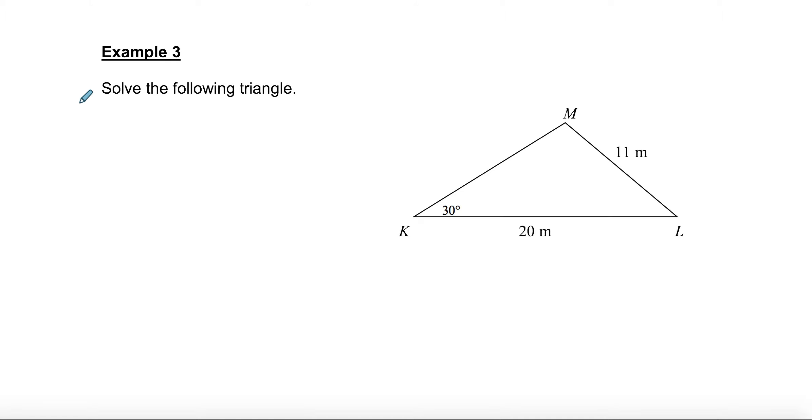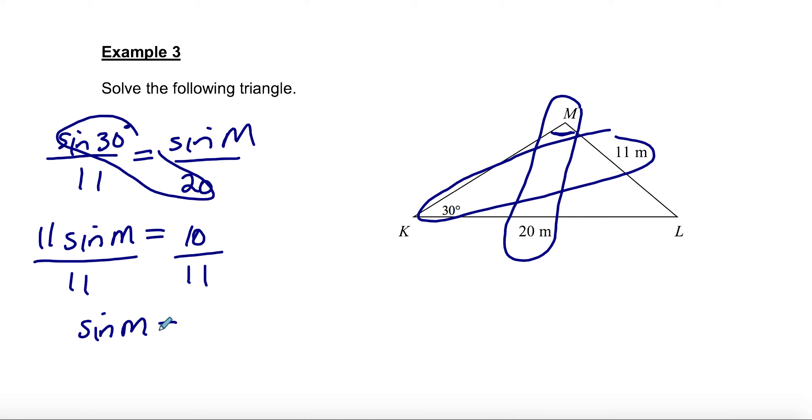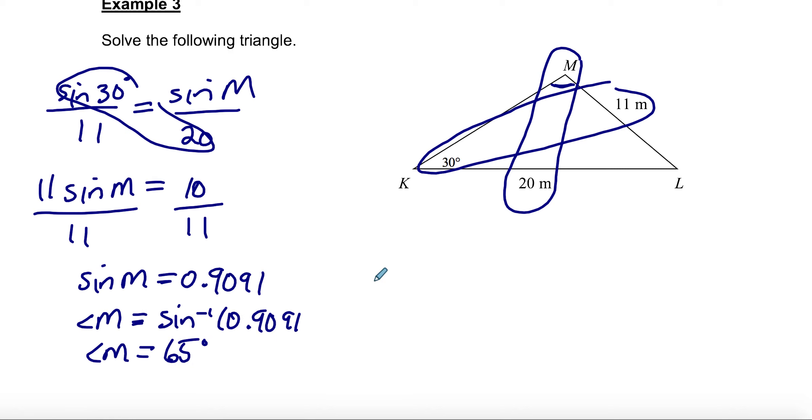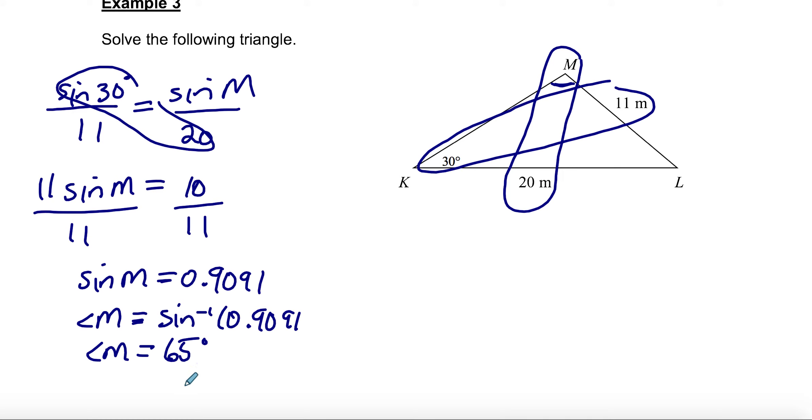Last example, example 3, solve the following triangle. Again this looks similar at first. It looks like we're going to end up finding an angle first. I have a partner here, sine of 30 over 11. It looks like I'm going to be able to find angle M first because I have side M which is 20. Cross multiply and I get 0.9091. But again the angle is missing, so I'm looking for an angle. I'm going to have to push shift or second function on my calculator, and I get that angle M is 65.